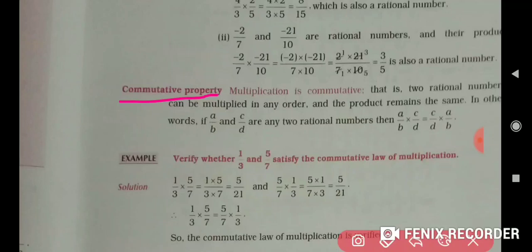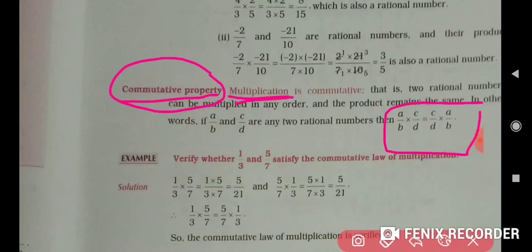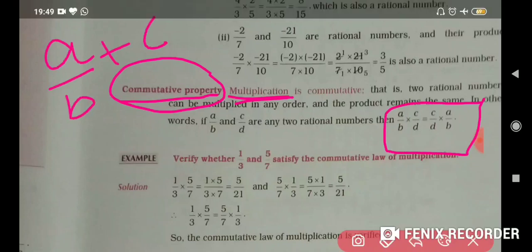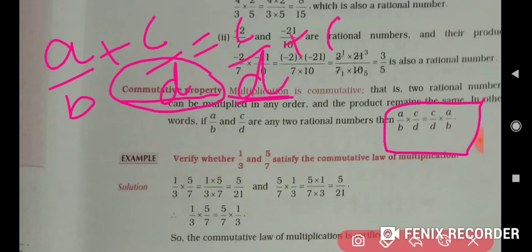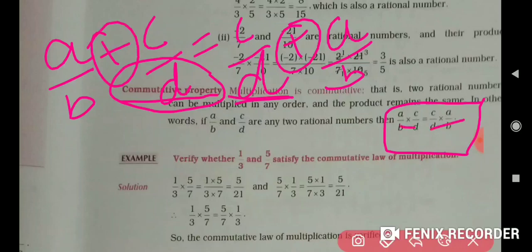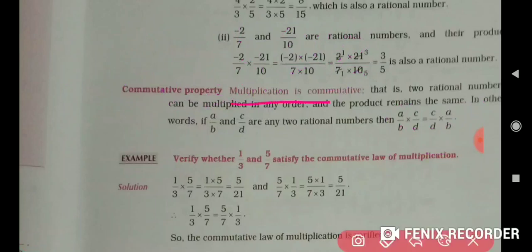Commutative property is not applied in subtraction. But in multiplication, commutative property is applied. Just as during addition: a/b + c/d = c/d + a/b, when you apply multiplication the sign changes to multiply. So a/b × c/d (LHS) should be equal to c/d × a/b (RHS).